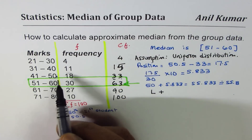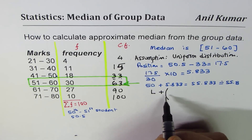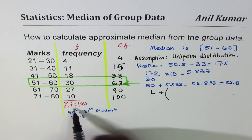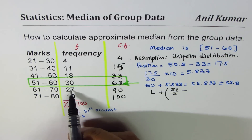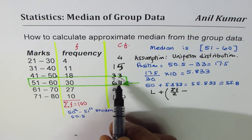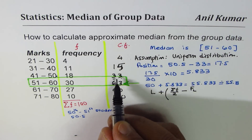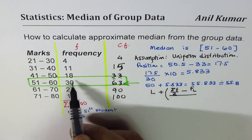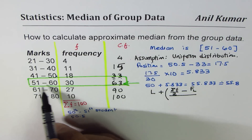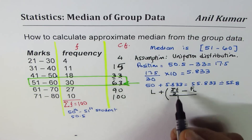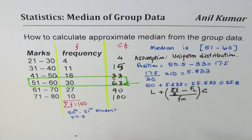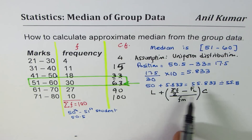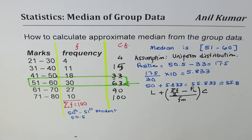Now let me also present the formal formula. We call the lower bound of the median class as L. The median formula is: L plus the quantity [sigma-f divided by 2, minus the cumulative frequency of the interval before the median class], divided by the frequency of the median class, times the class interval. In some schools, for an interval like 51–60, the lower bound L is taken as 50.5.